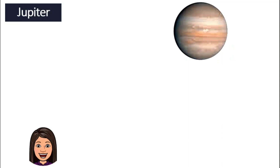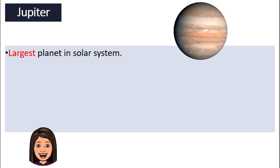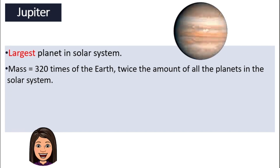Next, let's move on to Jupiter. Jupiter is a very special planet — it's almost one of my favorite planets other than Earth. Jupiter is the biggest planet in our solar system. It is about 320 times the Earth's mass, which means we would need 320 Earths to reach the mass of Jupiter, or twice the combined mass of all the other planets in the solar system.